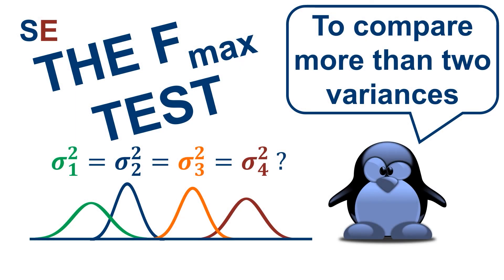Sometimes we need to know whether a set of more than two variances are equal. For example, if we want to do an ANOVA, that test requires that the variances of all the compared groups be equal. The most simple way to test for this is a technique called the F-max test.